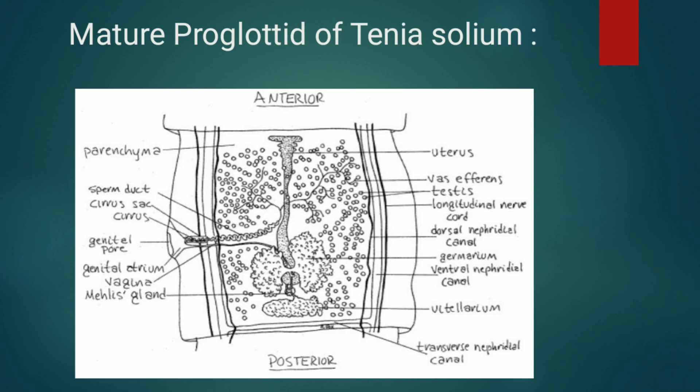The male genital system consists of follicular testes, vas deferens, and cirrus. The oviduct divides into two ducts: one leading to the vaginal opening and the other into the uterus. The vitelline gland lies behind the ovary. Male and female reproductive organs open into the genital atrium, which opens by a common gonopore on a swollen genital papilla. This is all about the mature proglottid of Taenia solium.